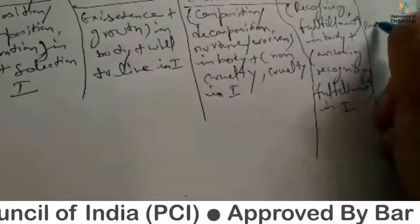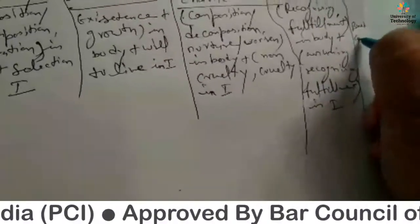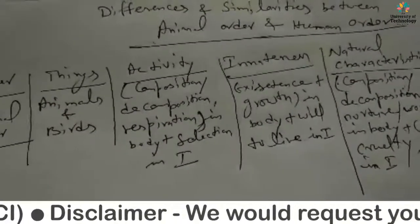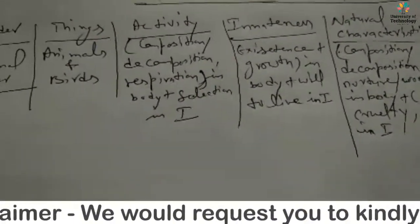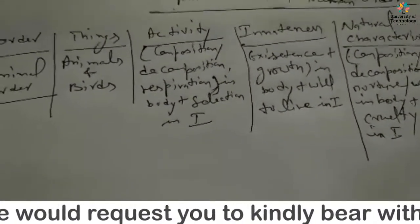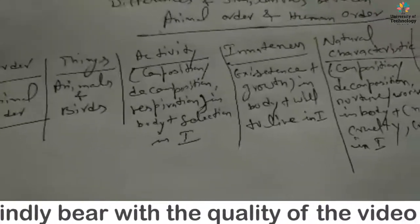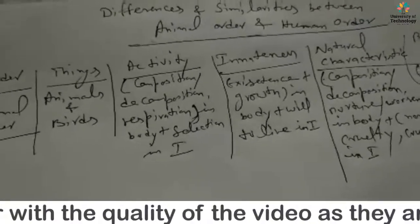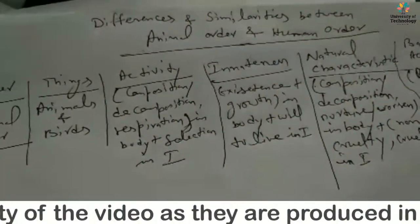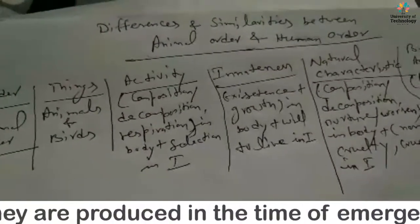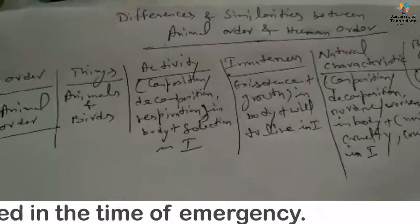So for animal order: order is animal, things are animals and birds, activity is composition, decomposition, respiration in body plus selection in I. For in-itness: existence plus growth in body, plus will to live in I.